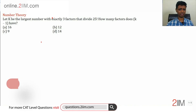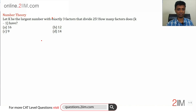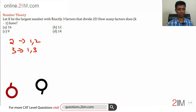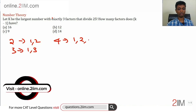There's some number that has exactly three factors. Let's try to find some number that has exactly three factors. A number like 2 has two factors. 3 has two factors. 4 has three factors.